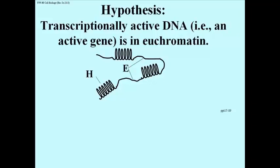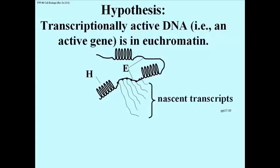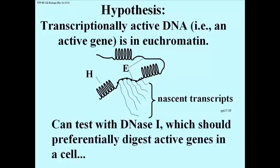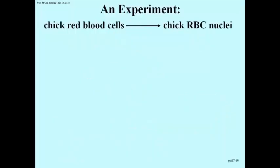DNA whose genes are actively being transcribed are more likely to be in euchromatin because it should be more accessible to the RNA polymerase. Here's transcription occurring in euchromatin but not in heterochromatin, showing nascent transcripts. We can test with the DNase whether euchromatin contains active genes versus heterochromatin containing inactive genes.